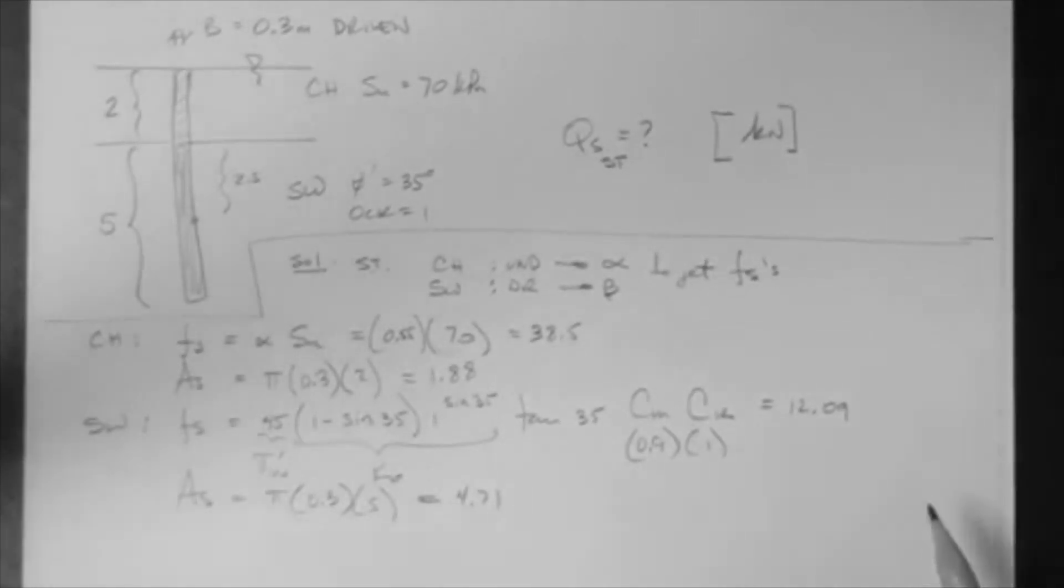So these are our numbers. Finally, we can get our Qs. So what's Qs? Qs, in the short term, is the sum of FsAs, right?